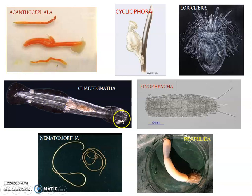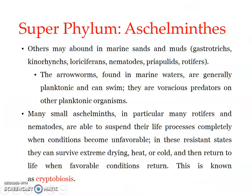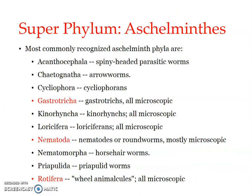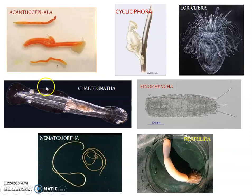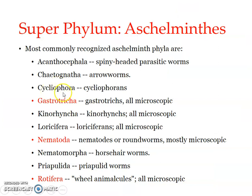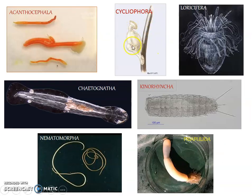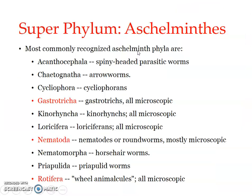The Chaetognatha have spine-like structures, with the mouth region at one end and the tail region at the other. They are found in marine waters, are planktonic, and can swim using extensions along the lateral surface of the body. Then we have the Cycliophora — commonly known as cycliophorans — which are microscopic in structure and very recently discovered organisms, with very few species reported in this group.